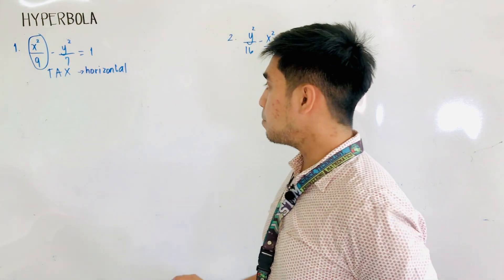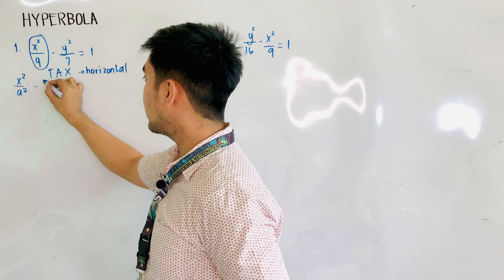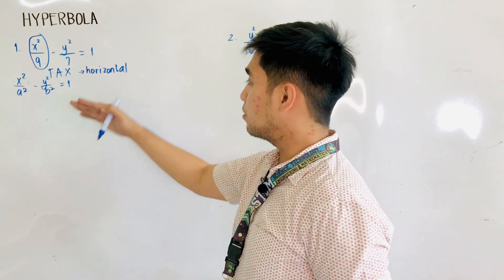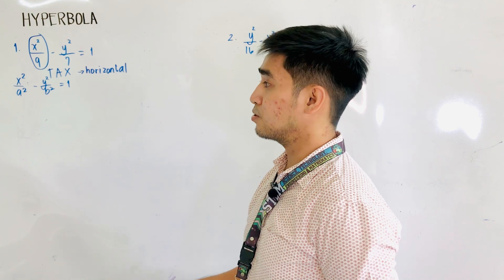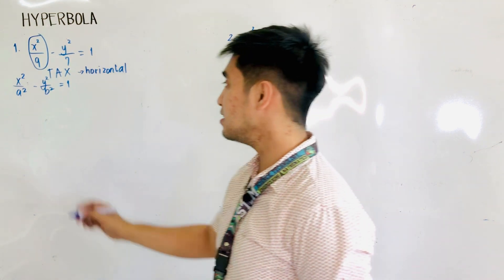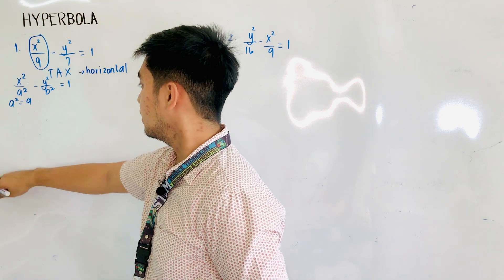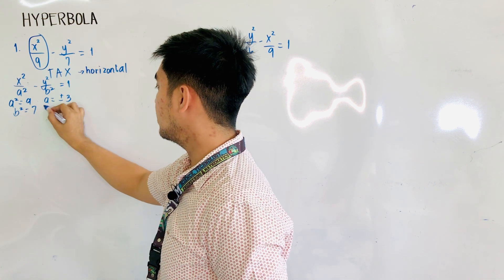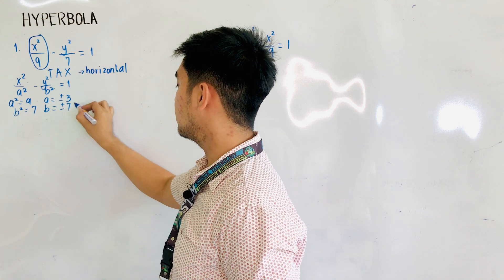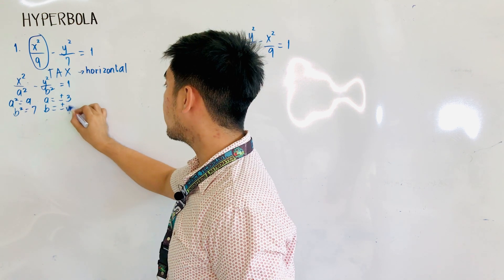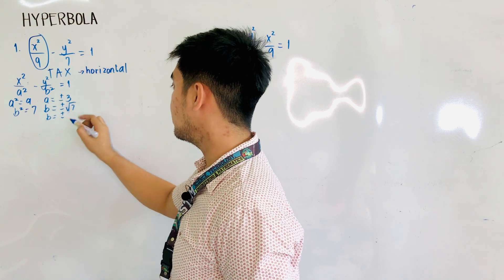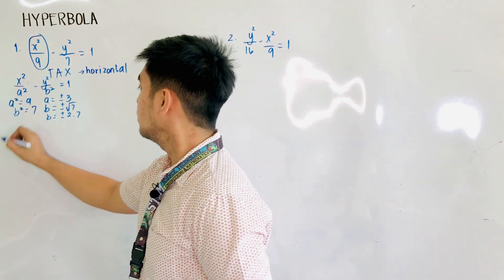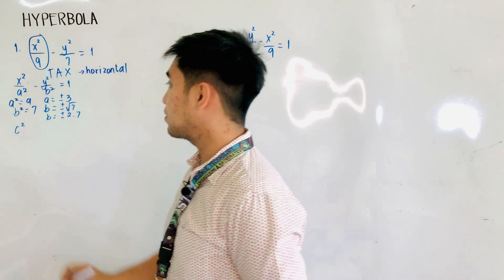The equation now takes the form x squared over a squared minus y squared over b squared is equal to 1. We are now ready to solve for a squared, b squared, and c squared. Our a squared is equal to 9, therefore a is equal to plus or minus 3. Our b squared is equal to 7, therefore b is equal to plus or minus square root of 7, approximately plus or minus 2.7. We now have a squared and b squared, so we are ready to solve for c squared.